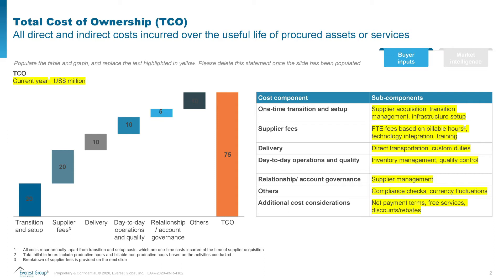Similarly, as you're building the TCO model, you also need to take into consideration the productivity benefits, any kind of discounts and rebates. The bottom line is that just looking at the supplier fee may not be sufficient, and understanding the total cost of ownership of that outsourcing relationship is pretty important for category managers to take more robust decisions.